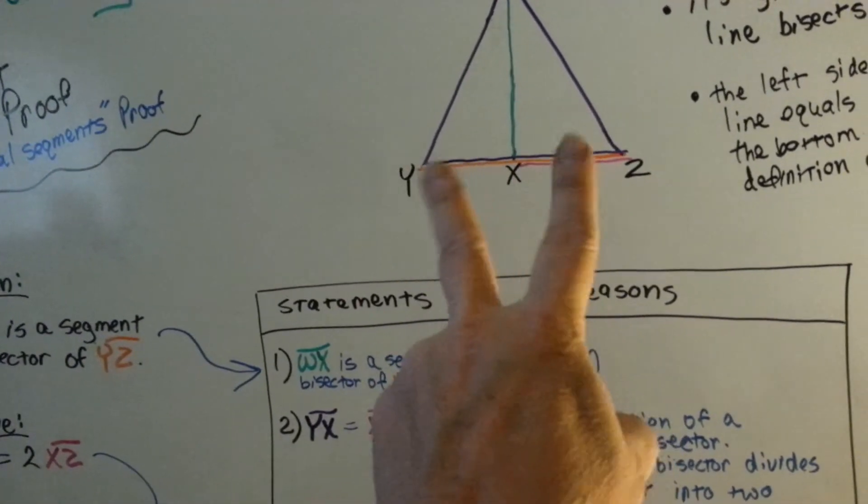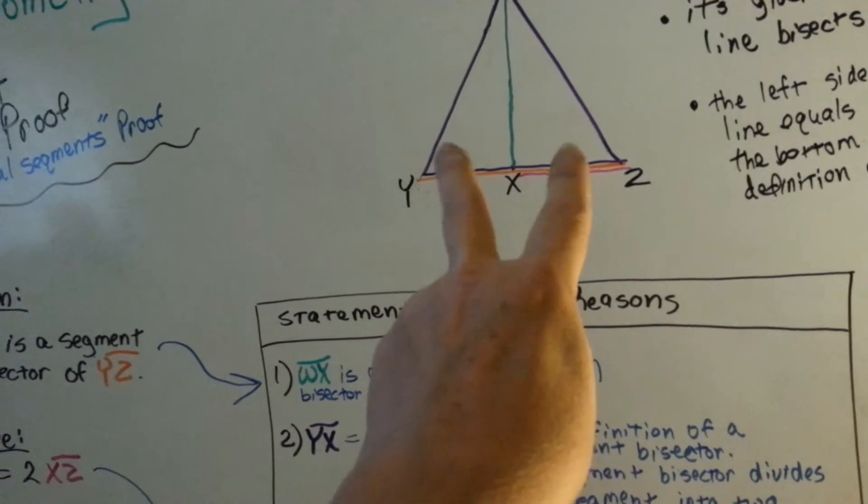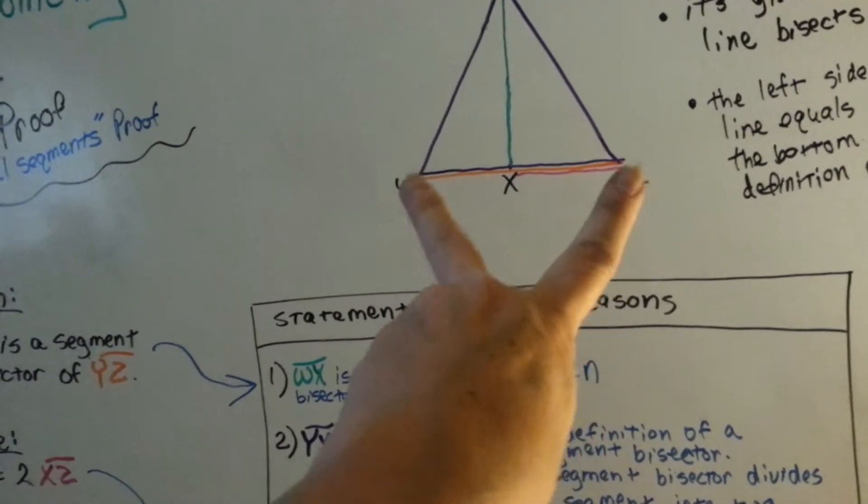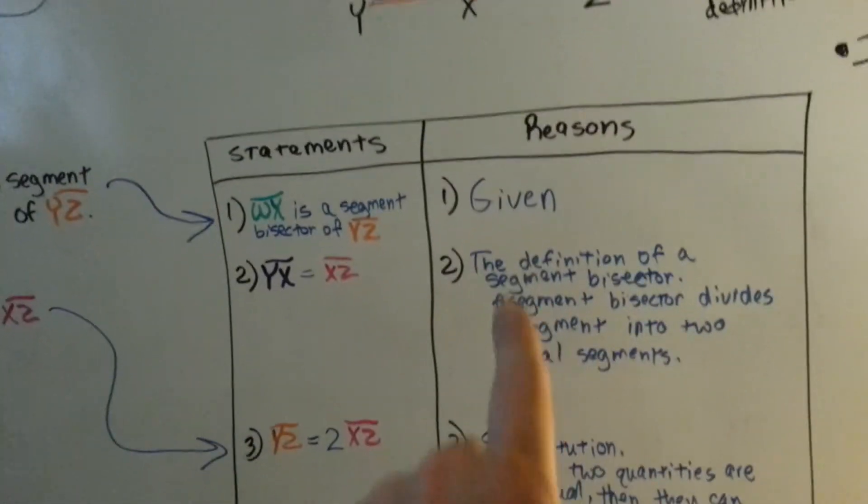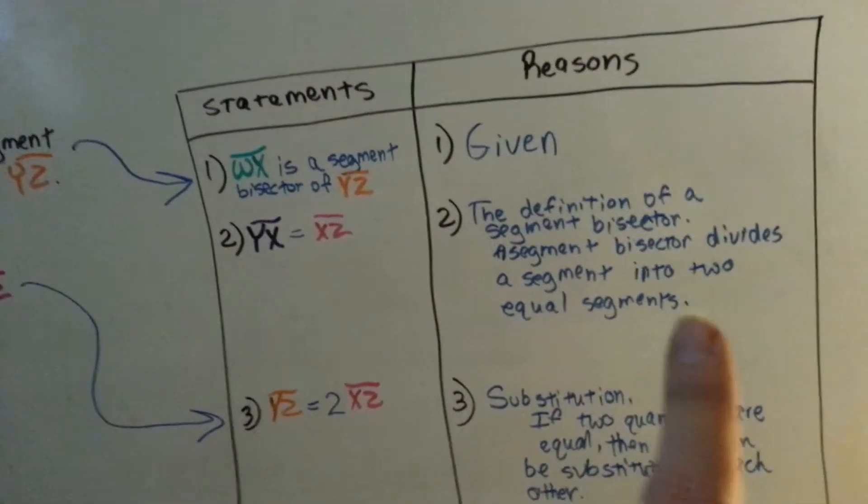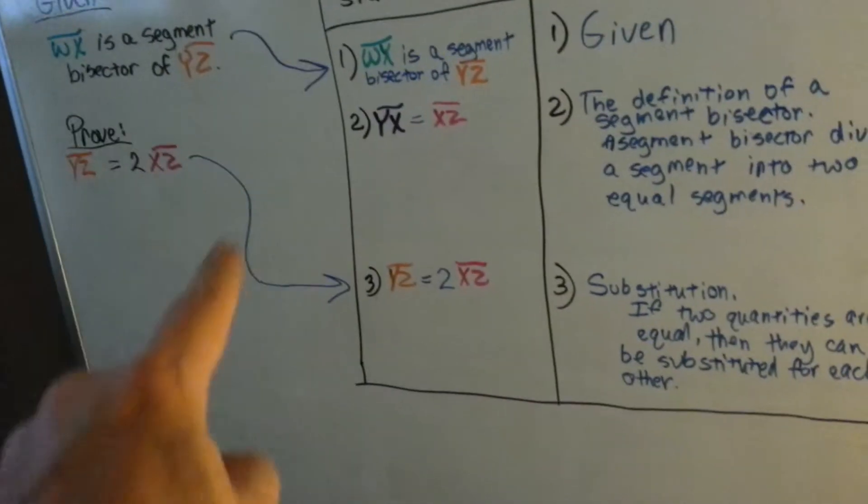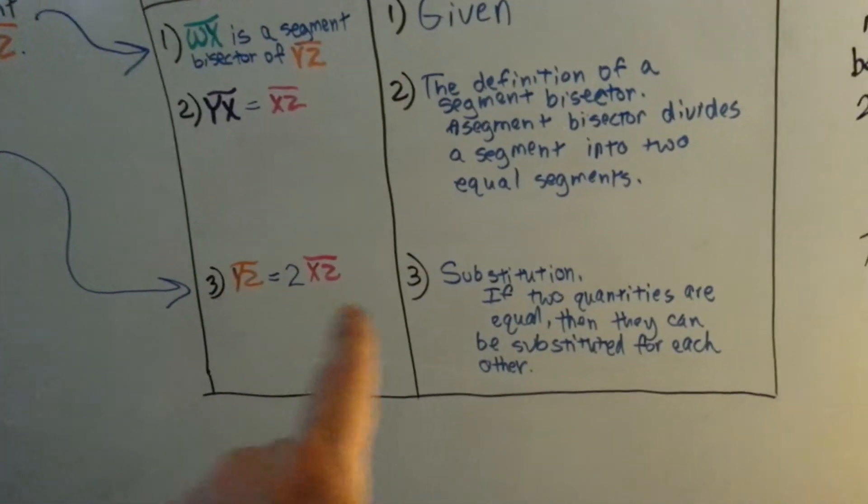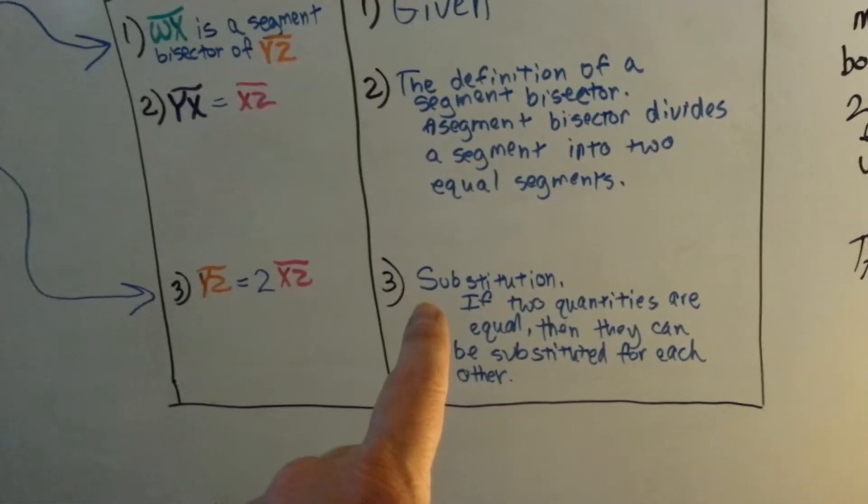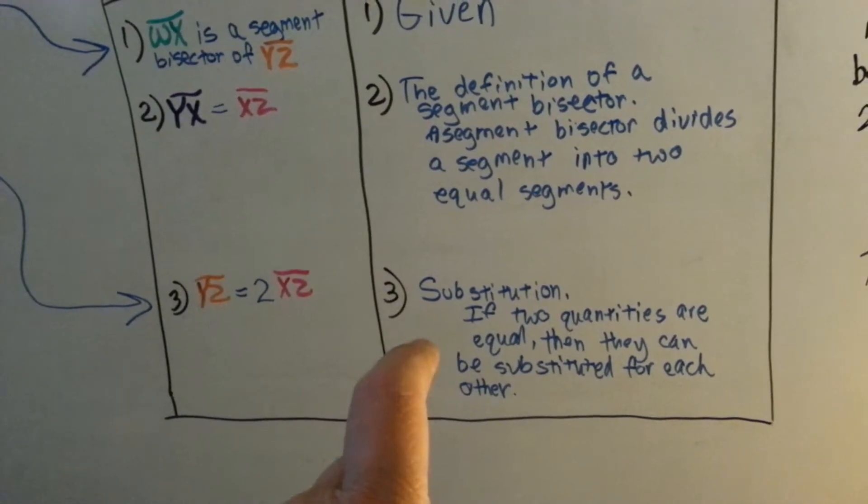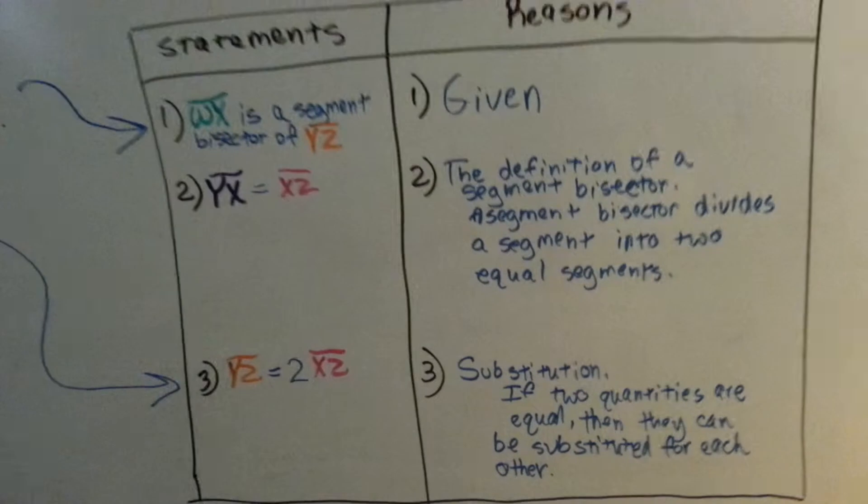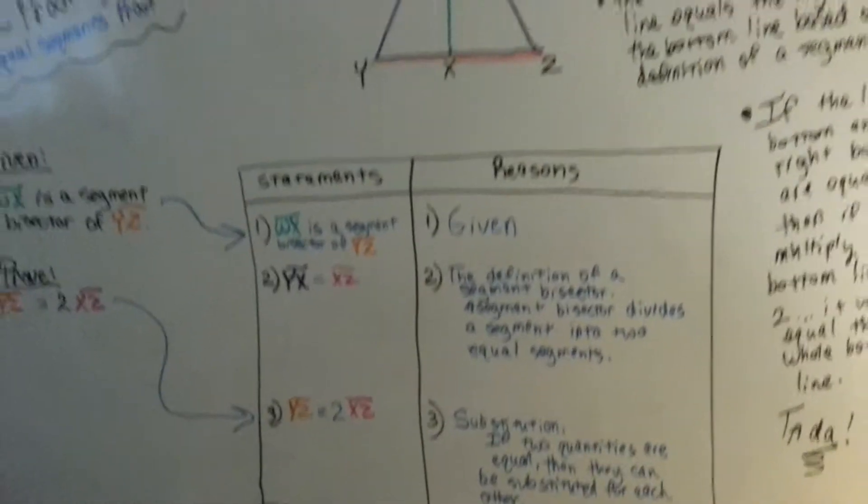If these two sides are equal and congruent, and you want to prove that this is equal to two of these, we did it with the definition of the segment bisector. This proof is proven because of the substitution principle or property. If two quantities are equal, then they can be substituted for each other. That's our reasons.